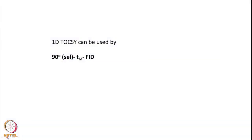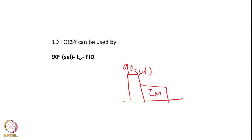That is the beauty of this experiment — we can do spectral editing by recording multiple 1D TOCSY experiments. Alternatively, TOCSY can be done by a simpler experiment: apply a selective 90-degree pulse on spin number 1, then a mixing time T_m, then detect FID. With increasing mixing time, we first see proton 2, then proton 3, then proton 4 and so on. So the 1D TOCSY experiment can be done easily and in quicker time.